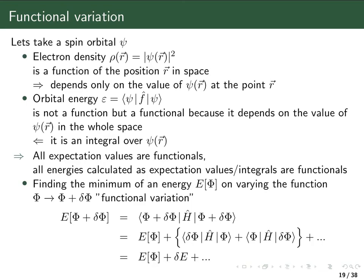Now let's look at another quantity: the orbital energy. The orbital energy is calculated as an integral involving the Fock operator, and therefore it is not a function but what we call a functional. It is a functional because it depends not on the value of the spin-orbital at one particular point in space, but on the values of the spin-orbital over all of space, since it is computed as an integral. In general, all expectation values in quantum chemistry — such as energies — are functionals.